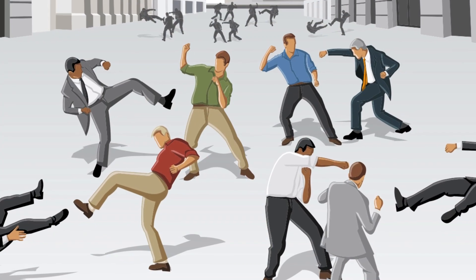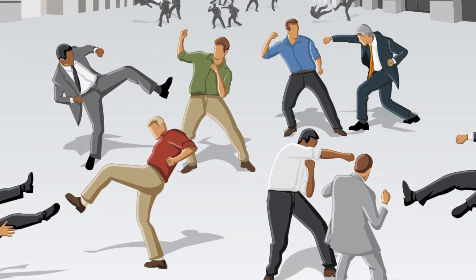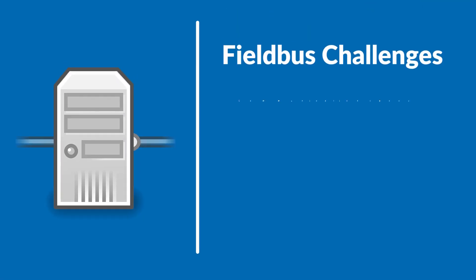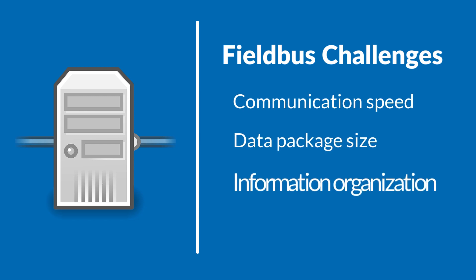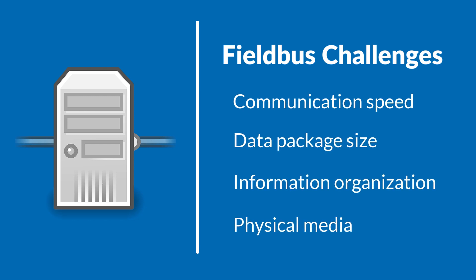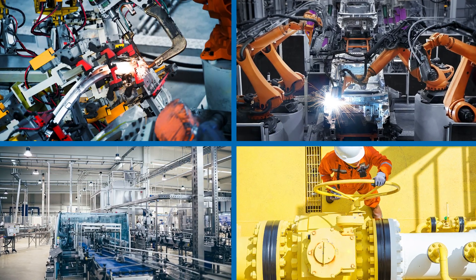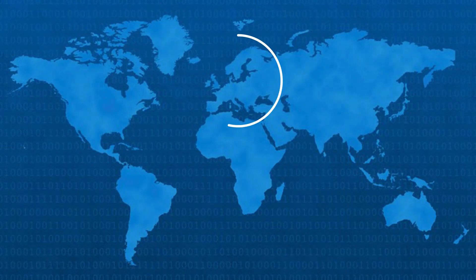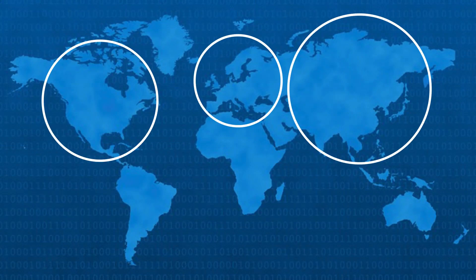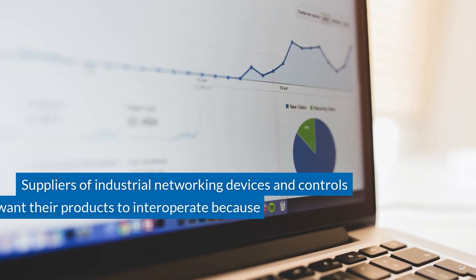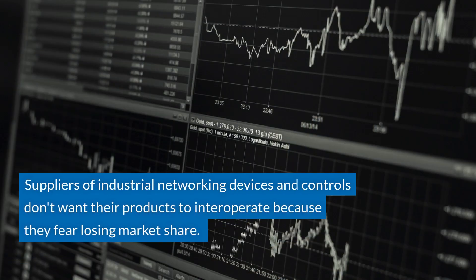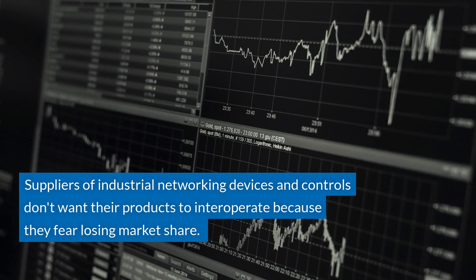While the basic fieldbus concept might seem cozy and collaborative, in practice there are many different communication protocols and standards. They typically aren't able to talk to each other or allow devices to interoperate. Although there has been some progress on translation and interoperability in recent years, they remain differentiated by communication speeds, data packet sizes, information organization, and physical media — usually because they grew up serving different technologies, industries, and regions, mostly in Europe, North America, and Asia. The other big snag is that suppliers of industrial networking devices and controls don't want their products to interoperate because they fear losing market share.